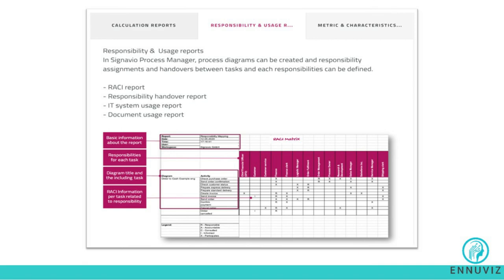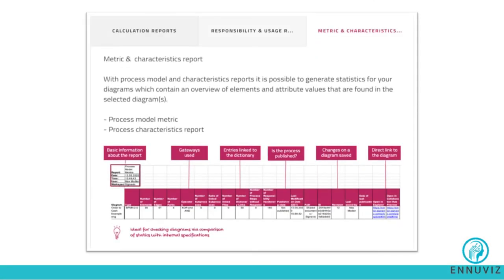Finally, let's talk about metric and characteristic reports. With process model and characteristic reports, it is possible to generate statistics for your diagrams which can contain an overview of elements and attribute values found in the selected diagrams. You can download process modeling reports and process characteristics reports.